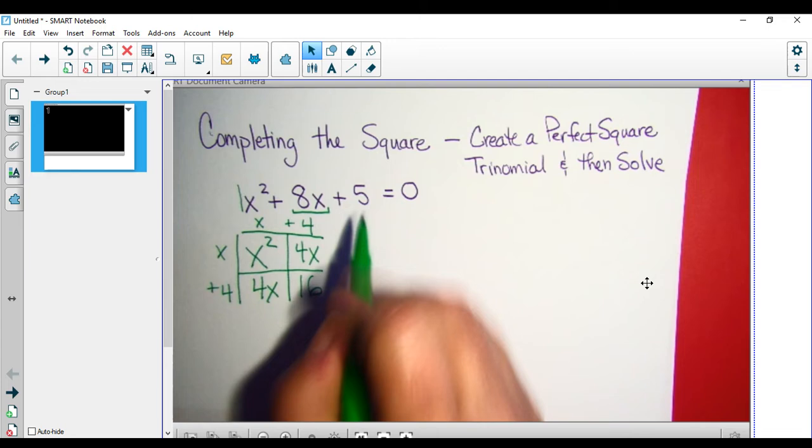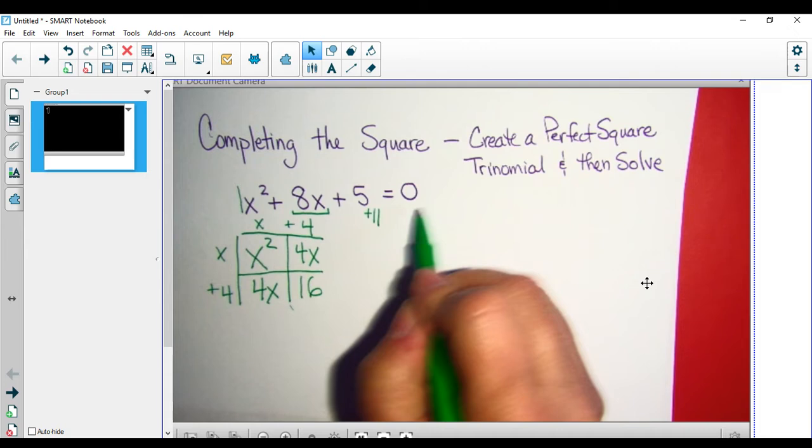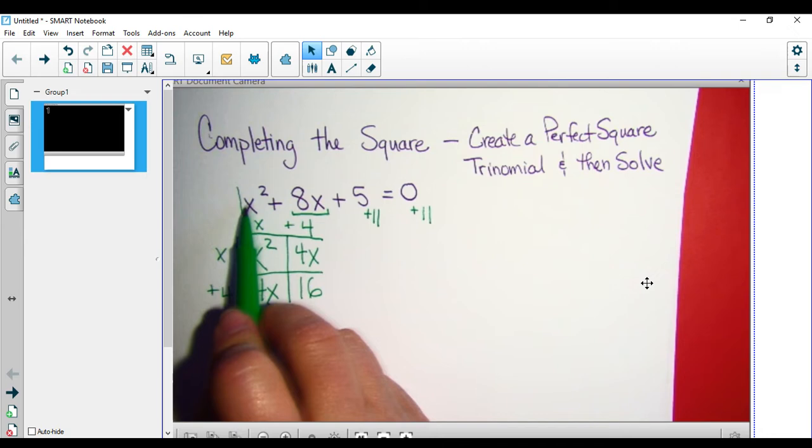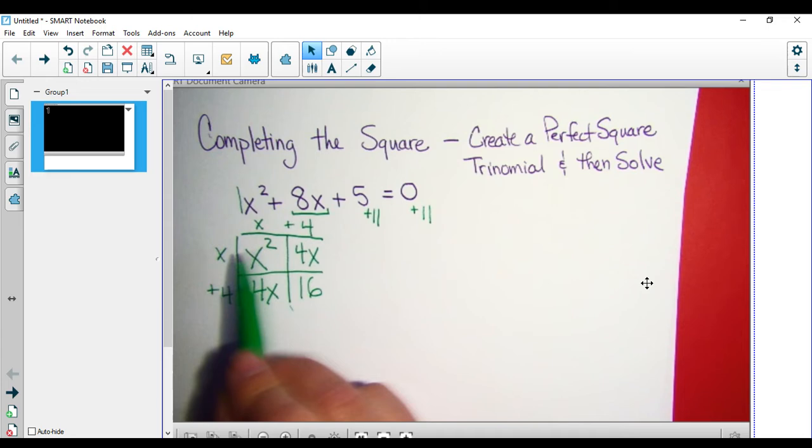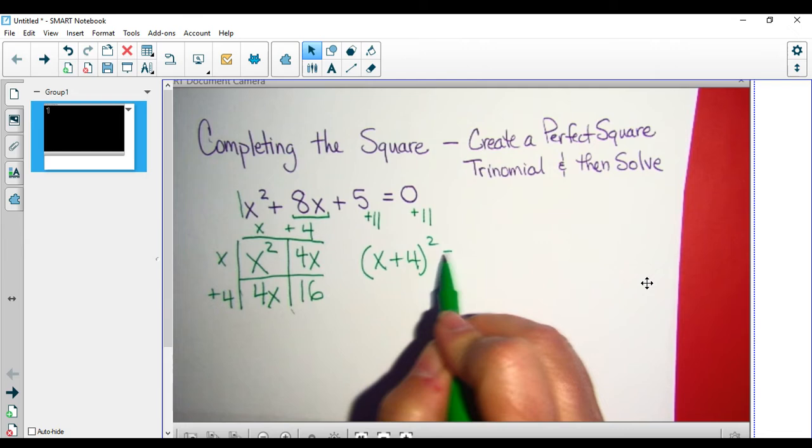I need 11 more in order to complete that square. So I'm going to add that to both sides. x squared plus 8x plus 16 here is the same thing as x plus 4 quantity squared, which is now equal to 11.